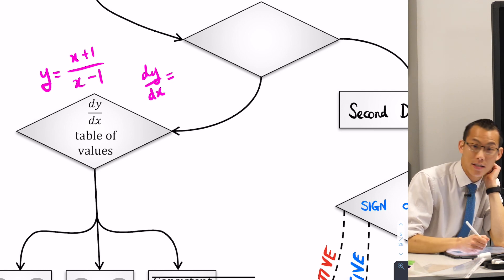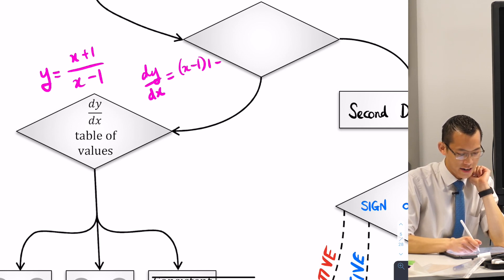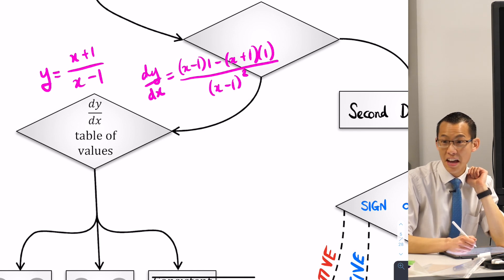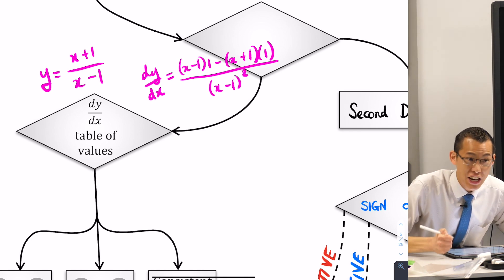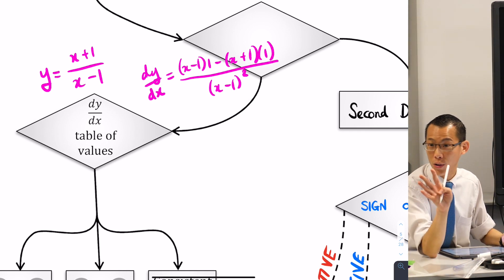I'm going to do v u dash, here's v u dash minus u v dash all over v squared. I'm going to simplify that and then I have to differentiate again to get to the second derivative. I want to avoid that at all costs, right?